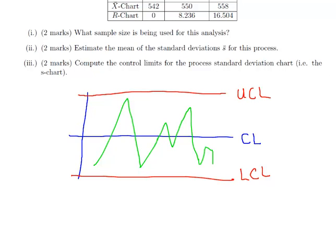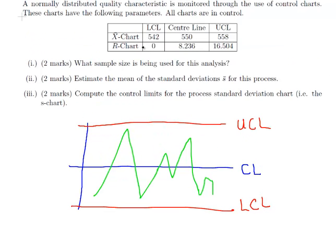What we have here is X bar: 542, 550, and 558. For the X bar chart, the center point here is 550. Up here we have 558, that's the upper control limit, and down below we have 542. For the R chart, the lower control limit is simply 0, the center line is 8.236, and the upper control limit is 16.504.